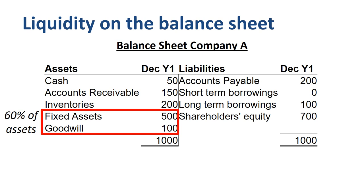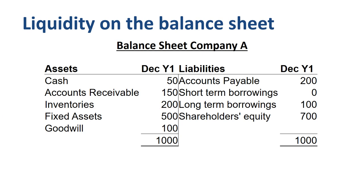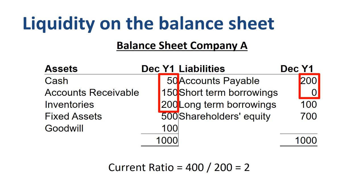If you compare current assets to current liabilities, things look a little bit better. The company has a current ratio of 2 — for every dollar of current liabilities, there are 2 dollars of current assets. A strong level of liquidity.